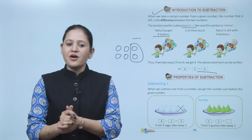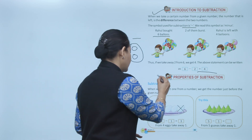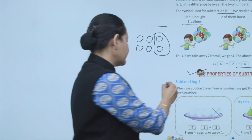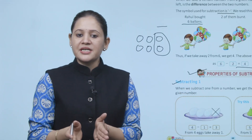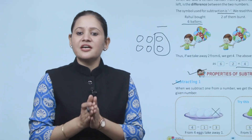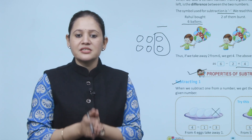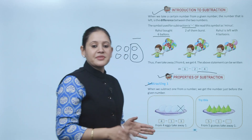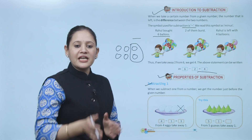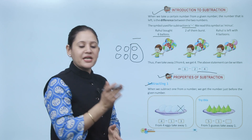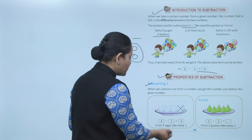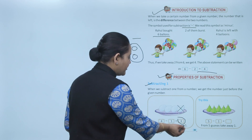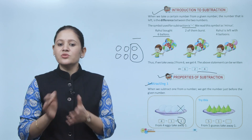Next, properties of subtraction. Subtracting 1: when we subtract 1 from a number, we get the number just before the given number. So here, total 4. 4 minus 1 — when we subtract 1 from a given number, we get the previous number. So 4 minus 1 equals 3.